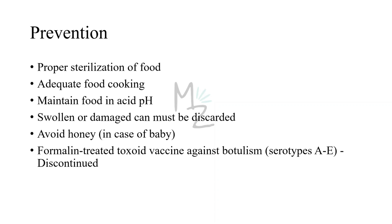Prevention: proper sterilization of all canned and vacuum-packed foods is essential. Food must be adequately cooked to inactivate the toxin. Maintaining food in an acidic pH is important — citrus foods like lime can be used for this purpose. Swollen and damaged cans must be discarded. Honey should be avoided in infants to prevent infant botulism. A formally treated toxoid vaccine with serotypes A to E was previously used but has since been discontinued.